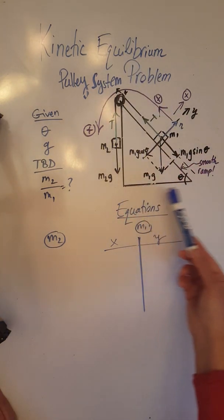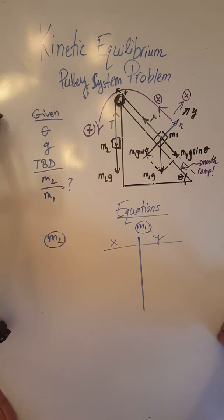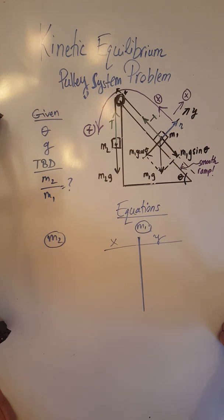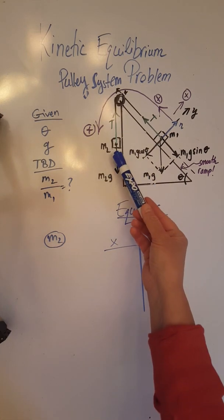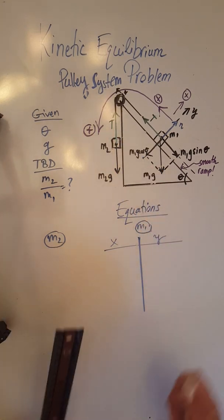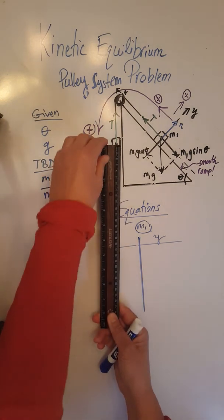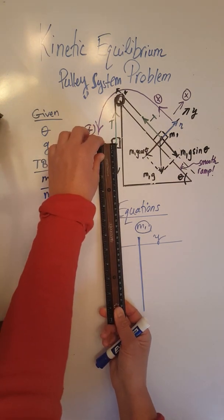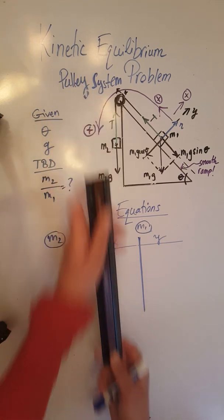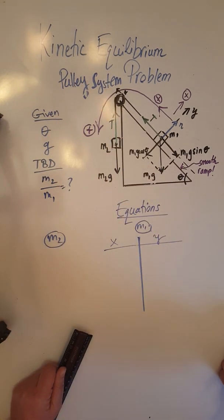Here is the free-body diagram that I already showed how to develop in one of my previous pulley system videos. Let's quickly do a magnitude check for each of the two objects. Whenever objects are in equilibrium, whether static or kinetic, the forces acting upon them must be balanced. For M2 we have M2g vertically down and tension T vertically up — they must be equal in magnitude and opposite in direction. M2g is 5 centimeters and so is T, so we are okay with the M2 magnitude check.